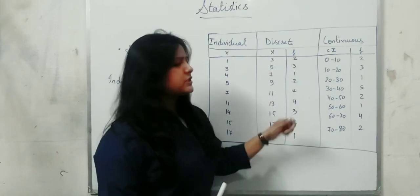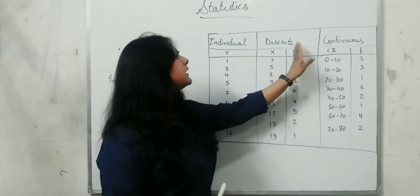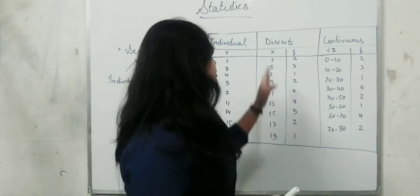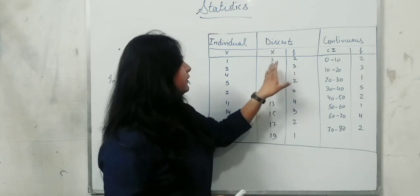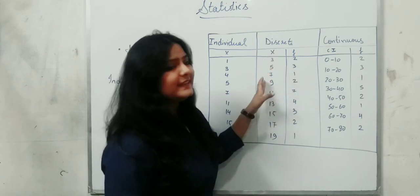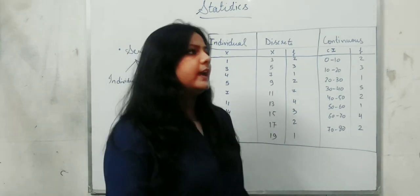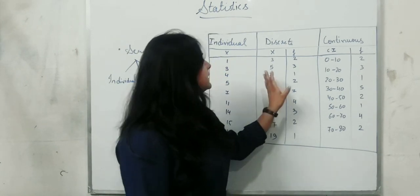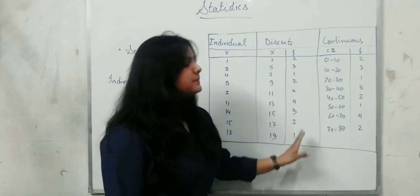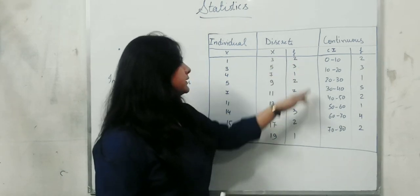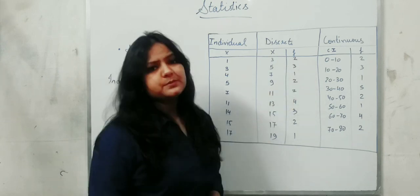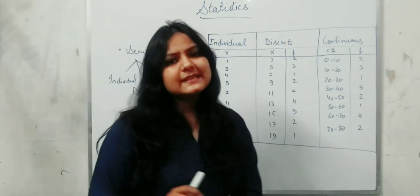So, if you have a discrete series, you can understand that if you have two columns — X and F columns — instead of writing 3, 3, 5, 5, 5, 7, 9, 9, 11 and so on, how simple and good it is to write it in two columns. We can see that 3 appears 2 times, 5 appears 3 times, and so on. This is how you understand discrete series.